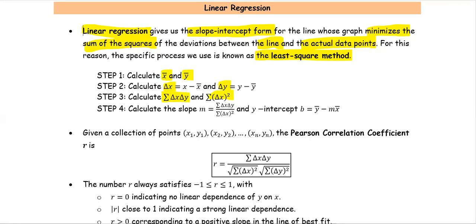The last step, calculate m by using the summation of delta x and delta y divided by the summation of the square of delta x. The y intercept, or value b, is calculated by y bar minus m times x bar, where x bar and y bar are the mean values calculated in step one.